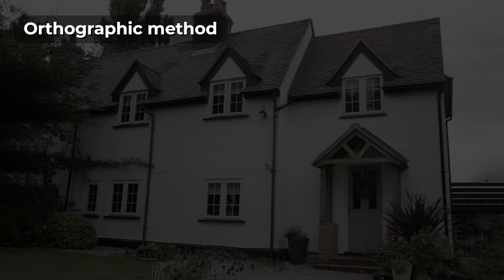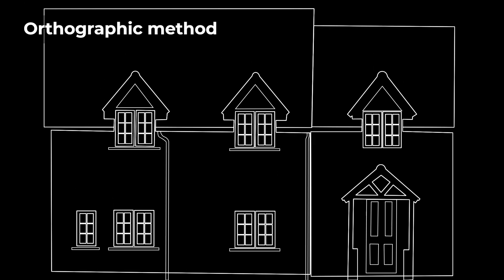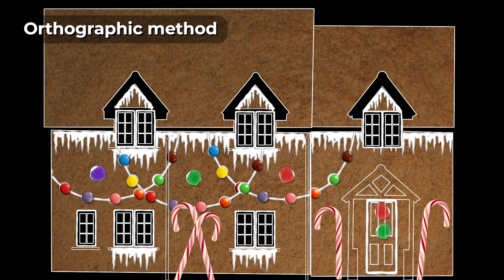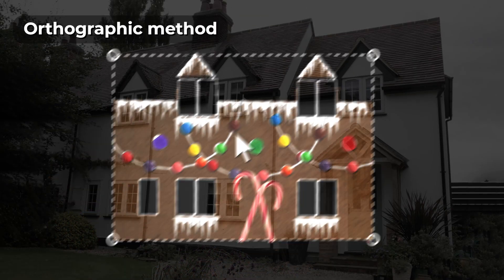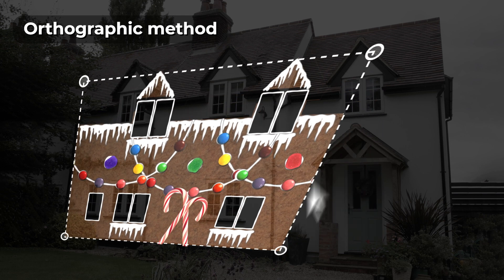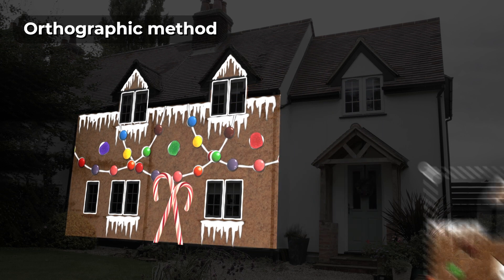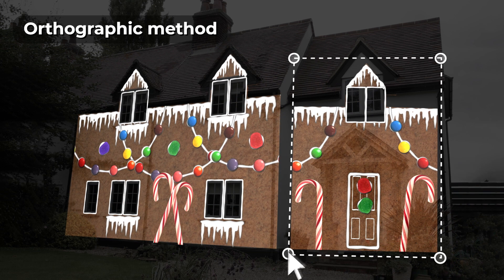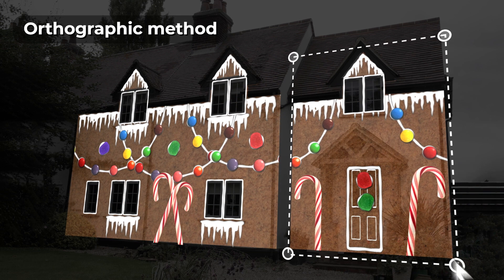The orthographic method involves creating a flat guide of your house that doesn't contain perspective. You design your show over this flat guide and then use projection mapping software to warp the flat content to fit the perspective of your projector.